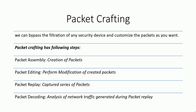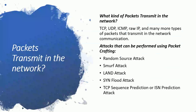These are the four steps we follow in packet crafting. When we talk about what kind of packets transmit in the network, there are a lot of packets — TCP, UDP, ICMP, IP, and ARP packets. We capture and modify these packets for attacks. For example, if there is any security on a device, we try to modify these packets and send them to bypass that security device.